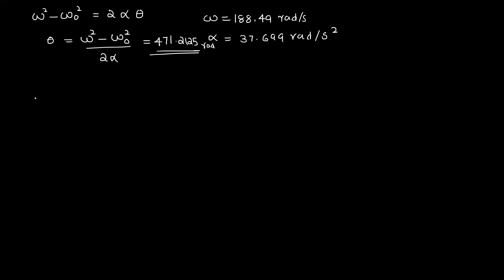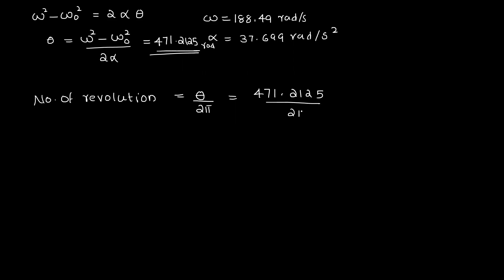The number of revolutions during acceleration equals theta divided by 2π, which works out to approximately 74.99, that is 75 revolutions.